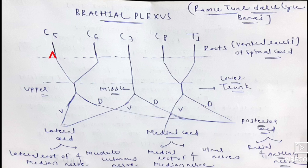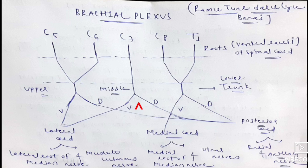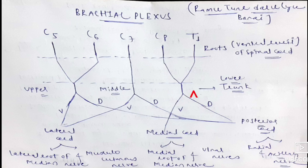The roots continue into trunks. C5 and C6 roots join together to form the upper trunk. C7 alone forms the middle trunk. C8 and T1 join together to form the lower trunk.